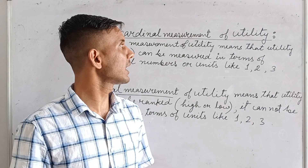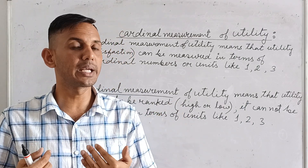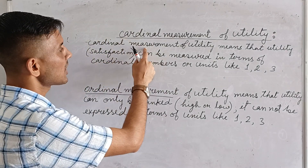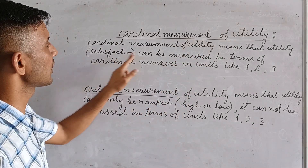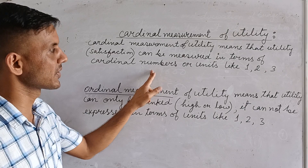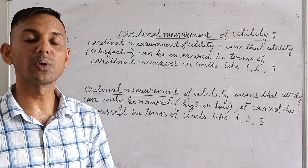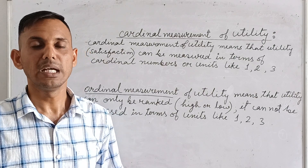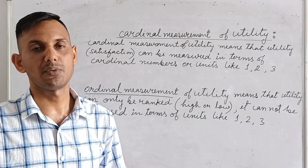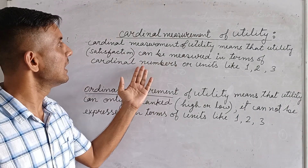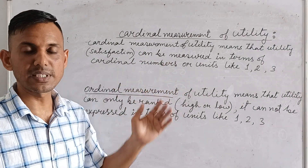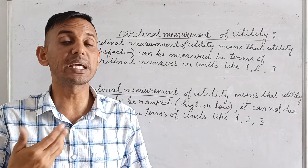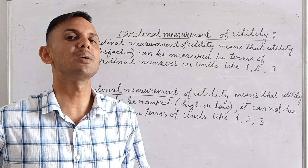According to Alfred Marshall, when we consume something and get satisfaction, we can measure it in terms of numbers. Cardinal measurement of utility means that utility or satisfaction can be measured in terms of cardinal numbers or units like 1, 2, 3. Hicks criticized this, saying satisfaction is a psychological concept and cannot be measured in numbers — we can only give it a rank.